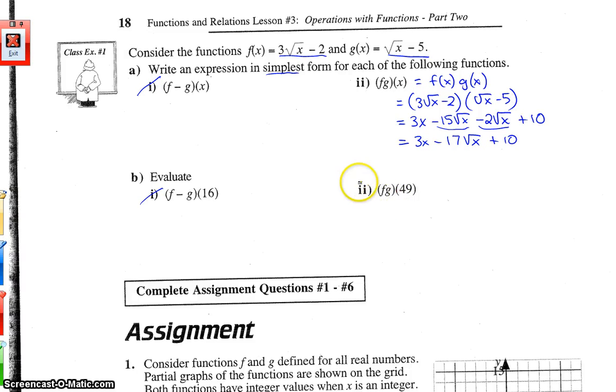Now, part B, it says evaluate, which means find the value of, or the number, right? So f times g at 49. We have a choice here. We could use our simplified form, or we could use the original. So whichever you would like to do, you can use. I'm going to try it with the simplified form.